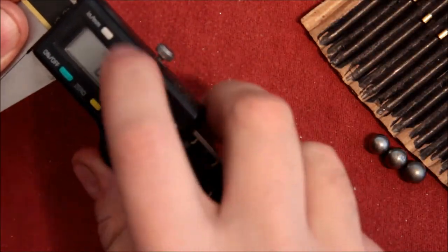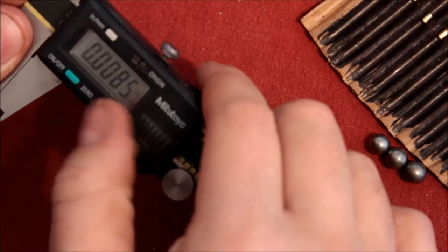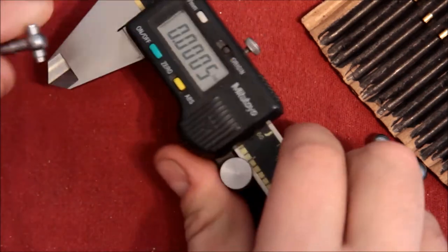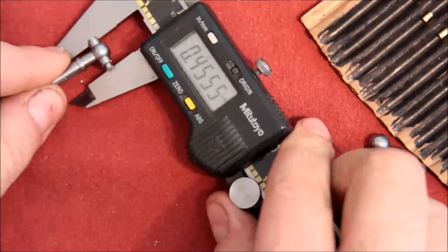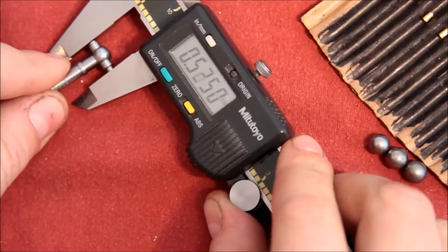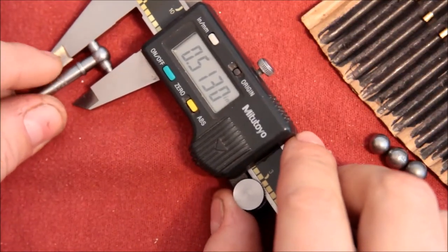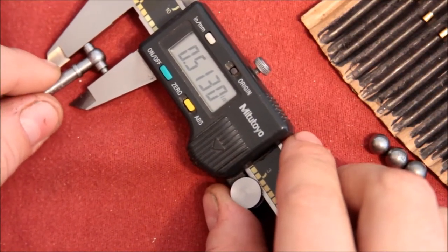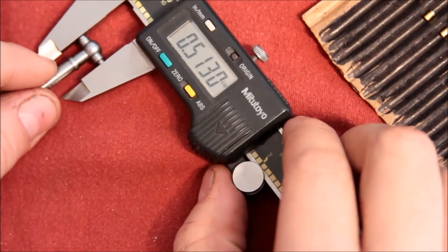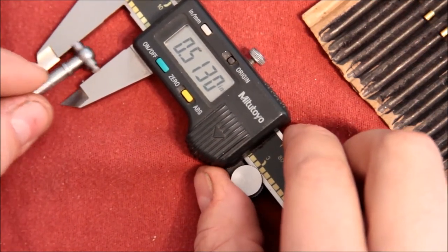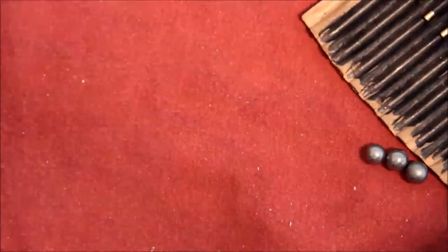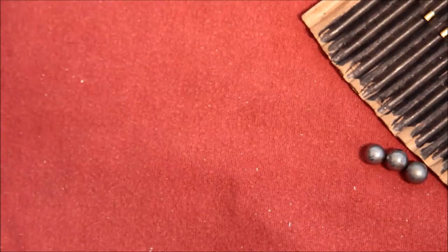You could also use your calipers if you have a set of calipers. Do the same type of thing. Put it in there. You want to make sure you use about the same amount of tension as you did when you measured it. That's coming out 5130. So a little disagreement there. But anyhow, so that was the measurement.